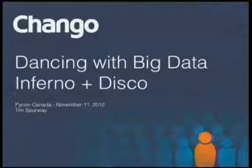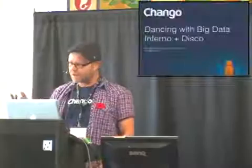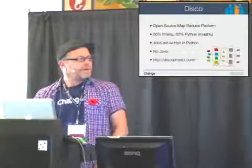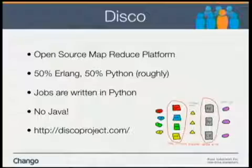Thanks. So Chango's an ad tech company, and we process a lot of data. We need to do MapReduce, mostly on logs. We've open sourced a framework on top of the open source Disco framework called Inferno, and that's what we're going to be talking about today.